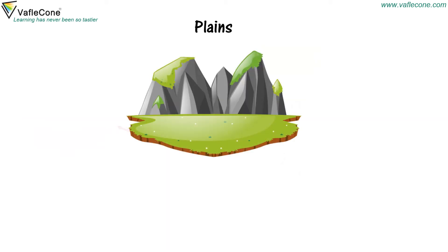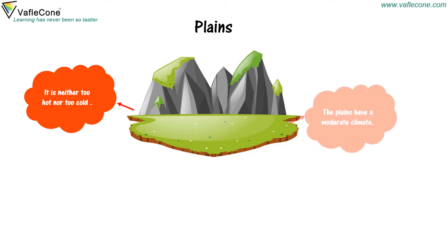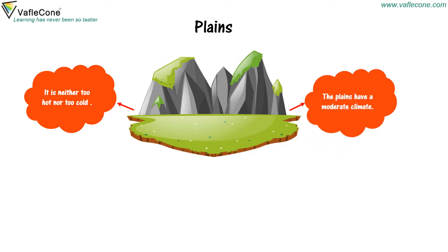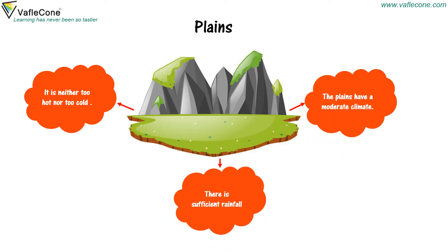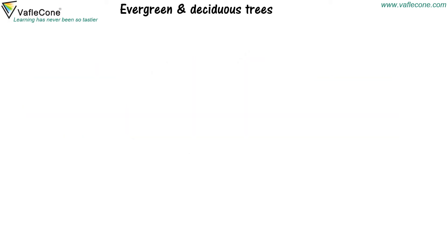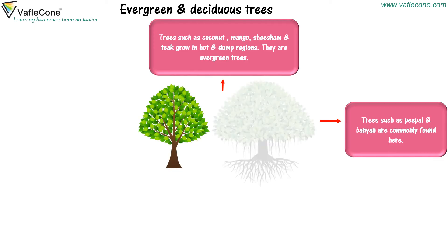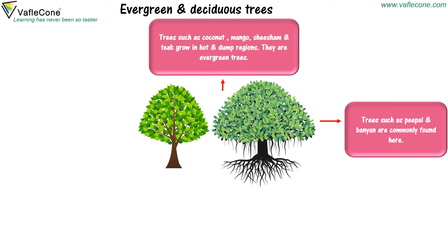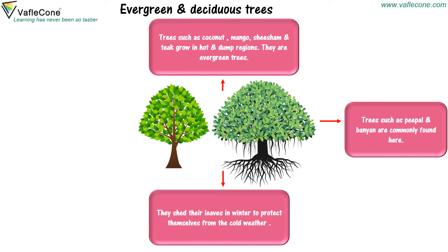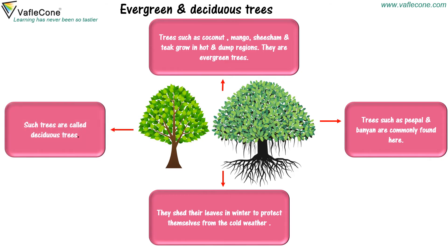Plains are neither too hot nor too cold and have a moderate climate with sufficient rainfall. Trees such as coconut, mango, shisham and teak grow in hot and damp regions — these are evergreen trees. Trees such as peepal and banyan are also commonly found here. They shed their leaves in winter to protect themselves from cold weather. Such trees are called deciduous trees.